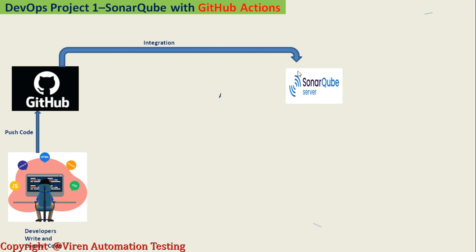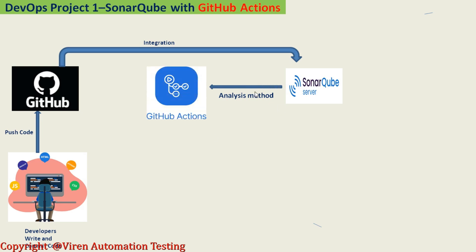Once the integration is successfully tested, we select the analysis method through SonarQube. Since I did the integration between GitHub and SonarQube, I am selecting GitHub Actions as the analysis method. GitHub Actions is my CI pipeline — a continuous integration pipeline that pulls the code from GitHub. When it pulls the code from GitHub, it starts executing the CI pipeline through GitHub Actions.